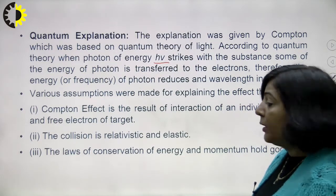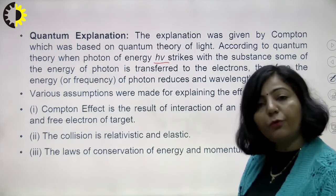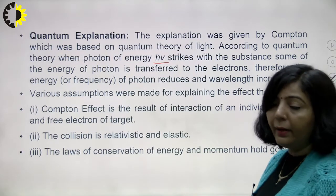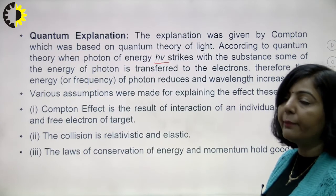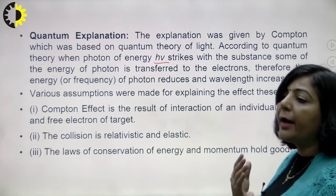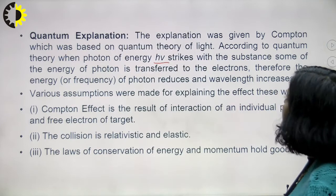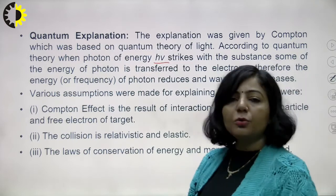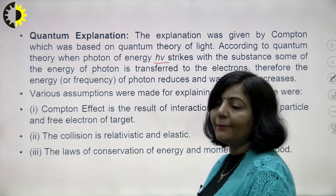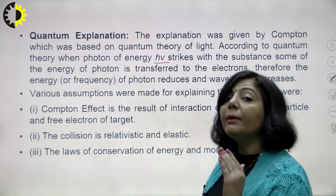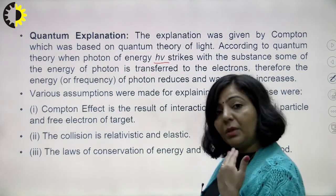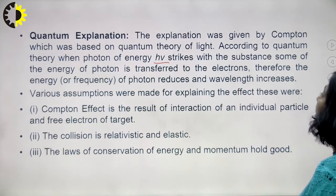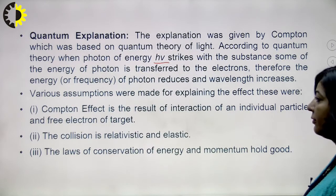The x-ray or gamma-ray photons interact with the electrons of the target material, transferring energy to them. Therefore the energy of the photon reduces and its wavelength increases — a decrease in energy means a decrease in frequency, which means an increase in wavelength.